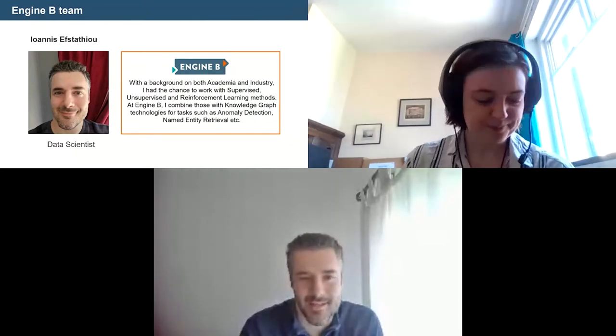So just to talk through who we are, a bit of introduction, and then what we're going to talk about. Ioannis, do you want to give us an introduction to yourself? Hi everyone, thanks for joining. My name is Yannis. I'm a data scientist at Engine B. My background is both in academia and industry, and that has given me the opportunity to use machine learning methods — supervised, unsupervised, and reinforcement learning — and combine those with knowledge graph solutions that we currently use in Engine B for tasks such as anomaly detection, named entity retrieval, and others.